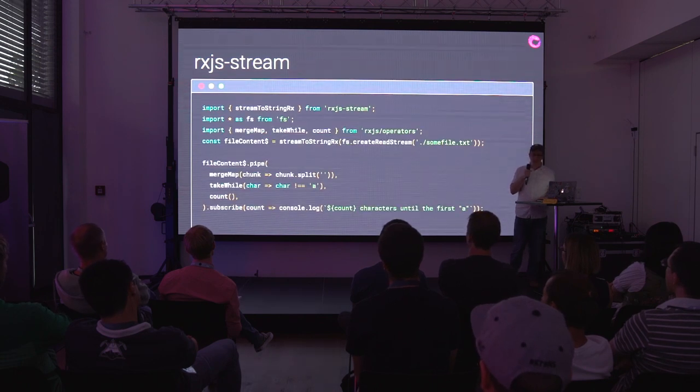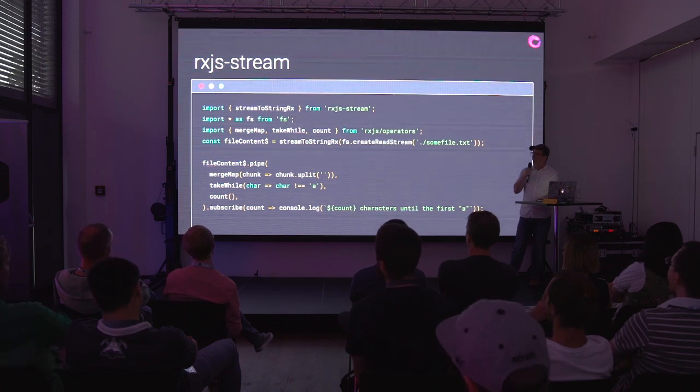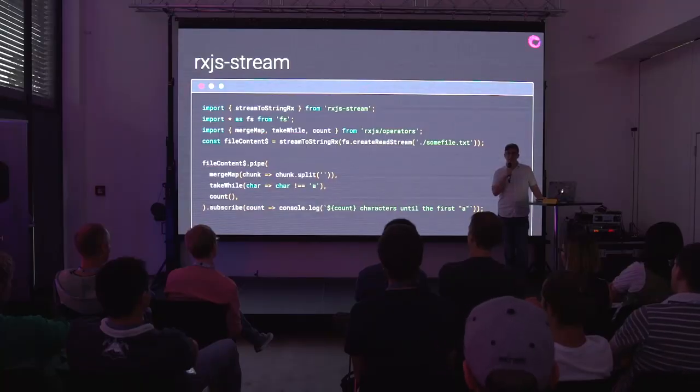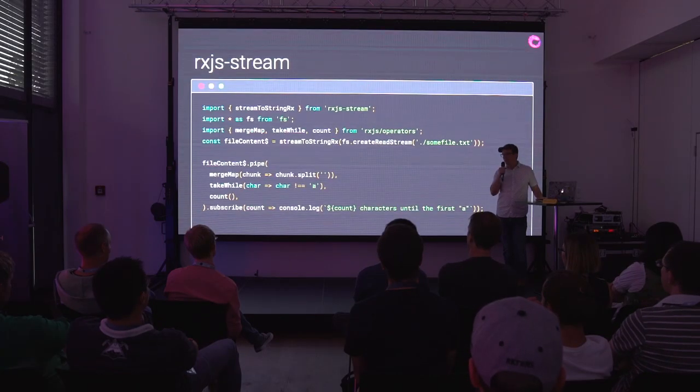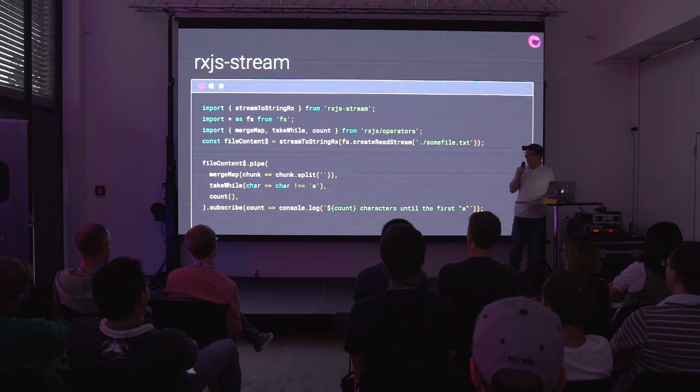You can also go the opposite direction — read a file into a stream and convert it into an Rx observable. The library handles encoding. For example, you could read some-file.txt character by character, and when you hit the character 'A,' stop and take a count of how many characters there were until you hit that letter A.